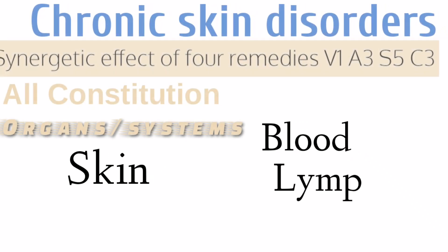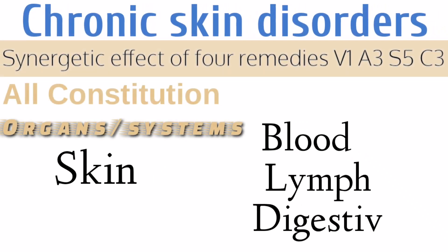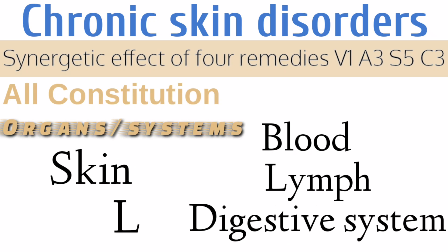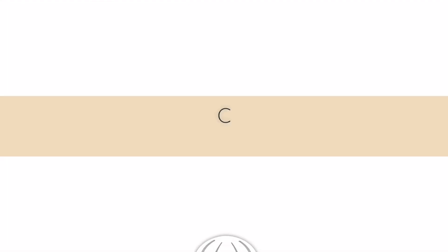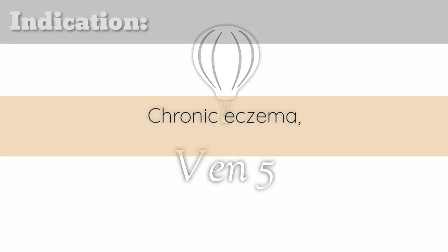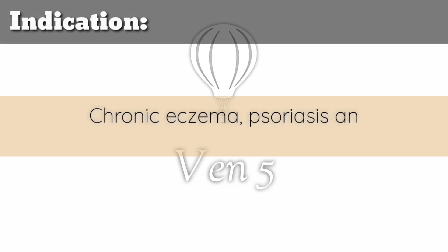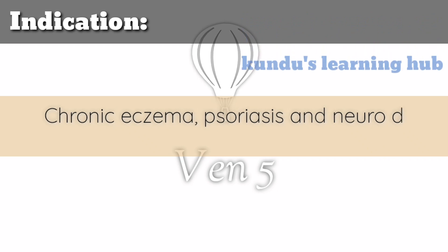Chronic Skin Disorders — Synergetic Effect of 4 Remedies: Ven1, A3, S5, and C3. All constitution. It affects organ systems like blood, lymph, digestive system, skin, and liver.